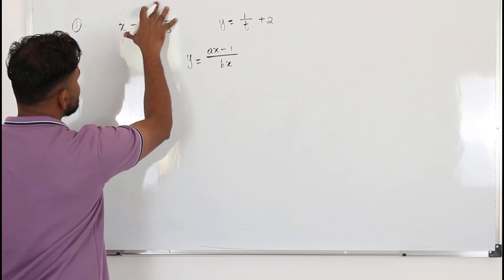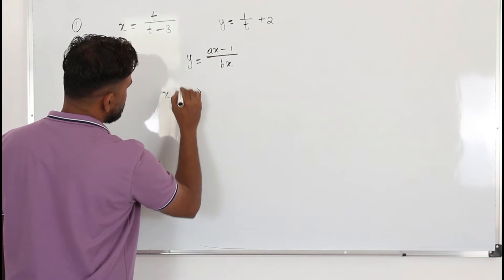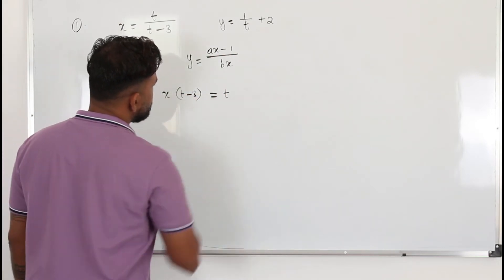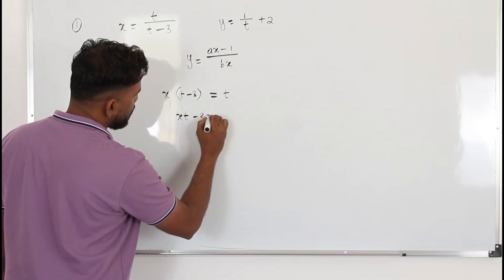Bring the t minus 3 here, x times t minus 3 equals t. Multiply, open the bracket, xt minus 3x is t.